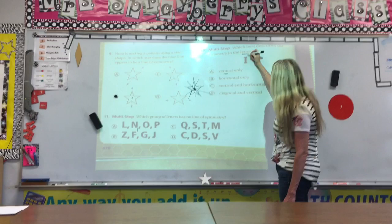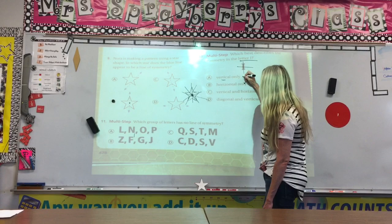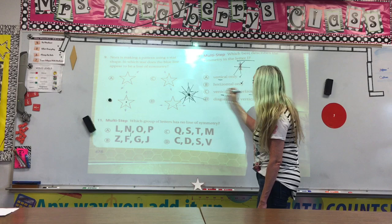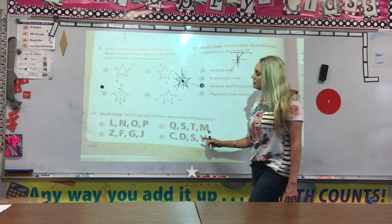Alright, it says, which best describes the symmetry of the letter I? Can I go vertically? Yes, I can. Can I go horizontally? Yes, I can. Can I go diagonally? No. So, it would be vertical and horizontal, which is C.